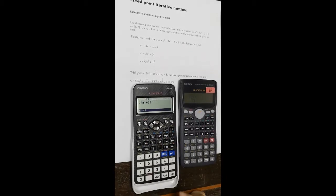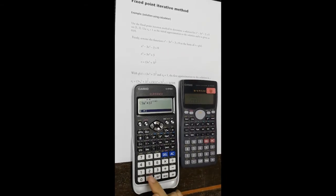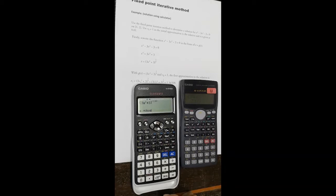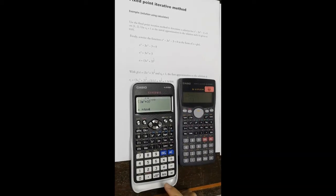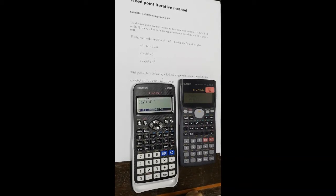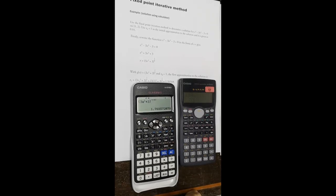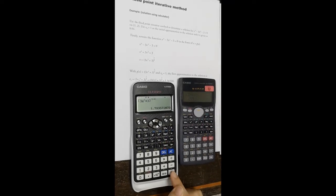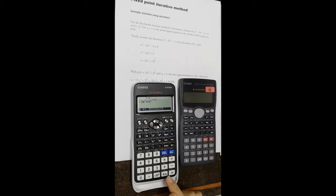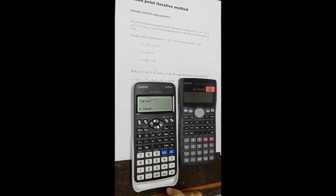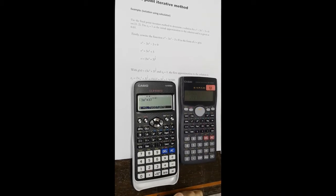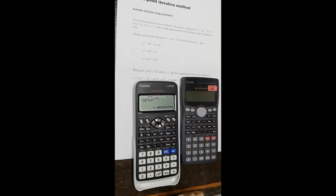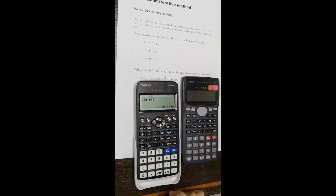Now I calculate what should be the x. It should be the answer in the previous calculation. Press equal, this is the x2. And calculate again, now I put in the answer as the current input, equal. This is the x3, and so on.